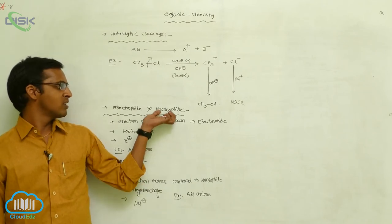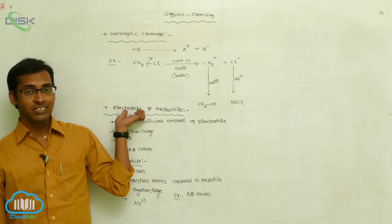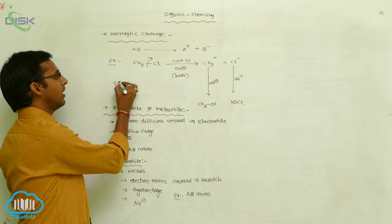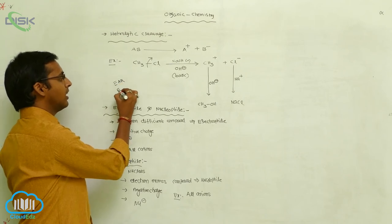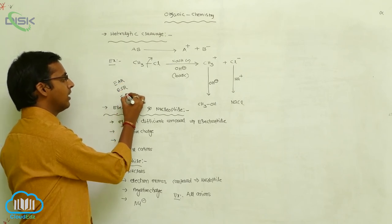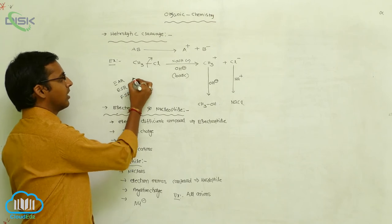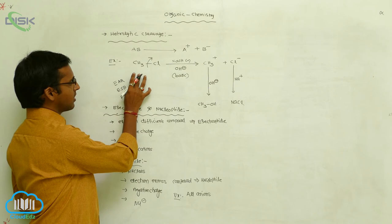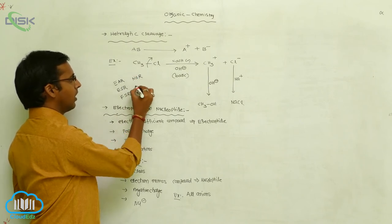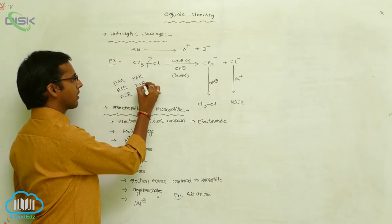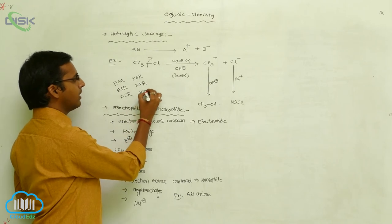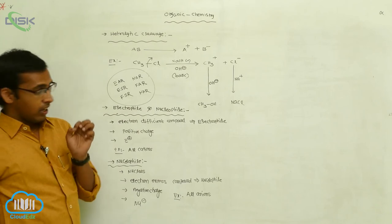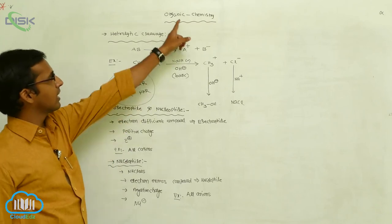Or, an electrophile is involved in an addition reaction — such reactions are called electrophilic addition reactions (EAR). Or ESR, or free radical substitution reaction (FSR), or nucleophilic substitution reaction (NSR), or free radical addition reaction (FAR), or nucleophilic addition reaction (NAR). These are the different types of reactions involved in organic chemistry.